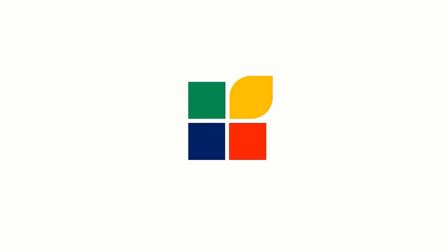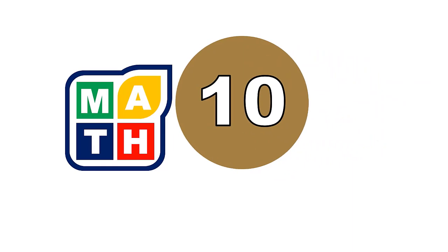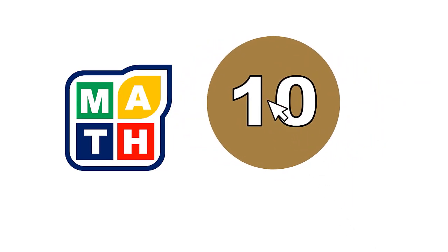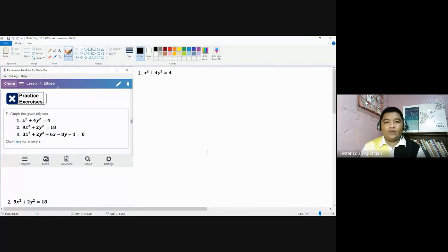Let us now sketch a graph of an ellipse. In graphing ellipses, we need those important details. Number one, we need to know its orientation or position. Number two, we need to determine the vertices, the co-vertices, the foci, and even the center itself.